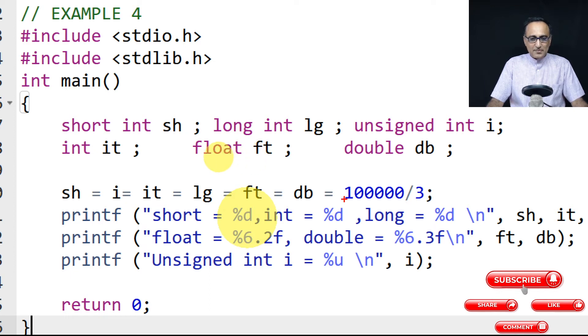So once this division happens, double becomes 33,333, same with float, same with long, same with integer. Unsigned int also no problem because it's a positive number. But with short, it is going to overflow.